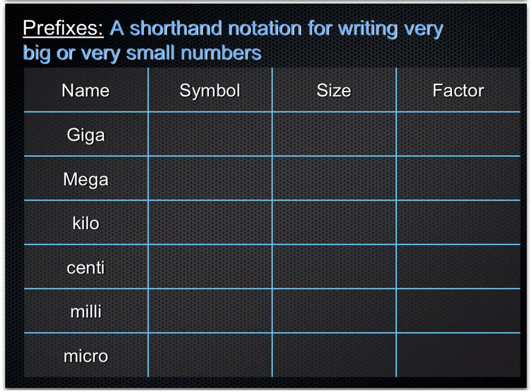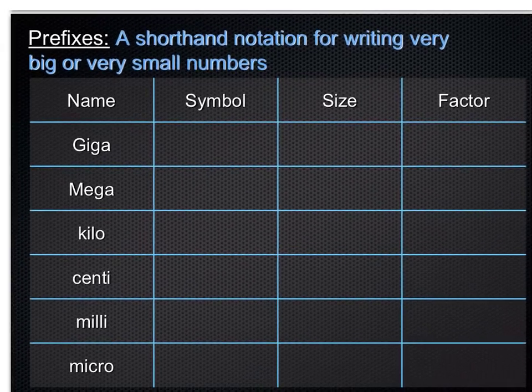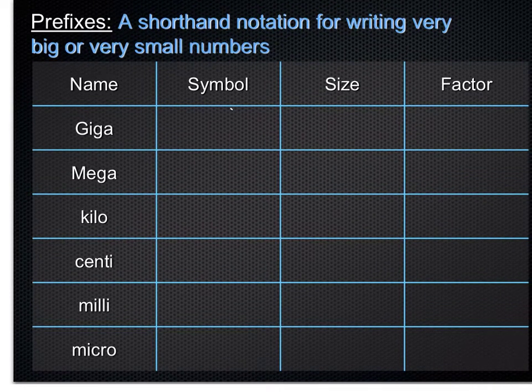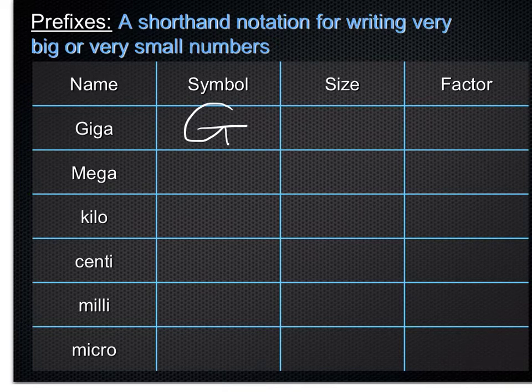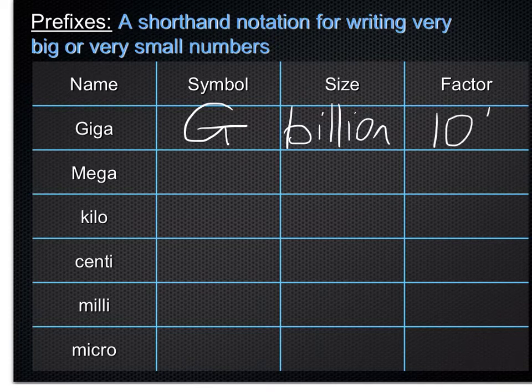Now you also need to know the shorthand notation that we use in scientific writing when we're dealing with very big or very small numbers. So we have words like giga and mega, which you're probably familiar with already. The symbol for giga is capital G, and the size of that is a billion. And the factor would be 10 to the power of 9.